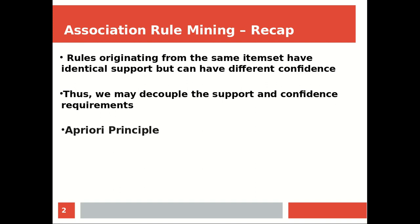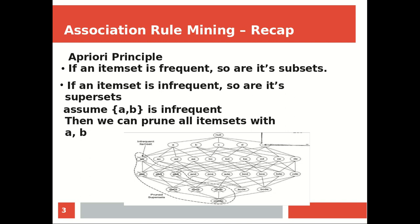So we decoupled the support and confidence requirements. The A-priori principle said that if an itemset is frequent, so are its subsets — meaning if BCDE is frequent, then BCD, BCE, CDE, and so on are all frequent. But if EB is not frequent, then EBCD and EB will also not be frequent. So the A-priori principle says that if an itemset is frequent, its subsets are frequent; and if an itemset is infrequent, its superset will also be infrequent.